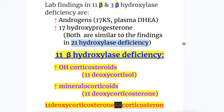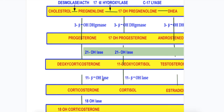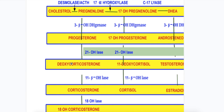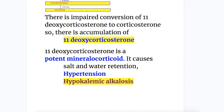In 11 beta hydroxylase deficiency there is an increase in hydroxycorticoid steroids, specifically 11-deoxycortisol and 11-deoxycorticosterone. When 11 beta hydroxylase is deficient, it affects both the cortisol and aldosterone synthetic pathways. The substrate 11-deoxycortisol accumulates in the cortisol pathway, and 11-deoxycorticosterone accumulates in the aldosterone pathway. Deoxycorticosterone is a potent mineralocorticoid that causes hypertension with hypokalemia, salt and water retention, and hypokalemic alkalosis.